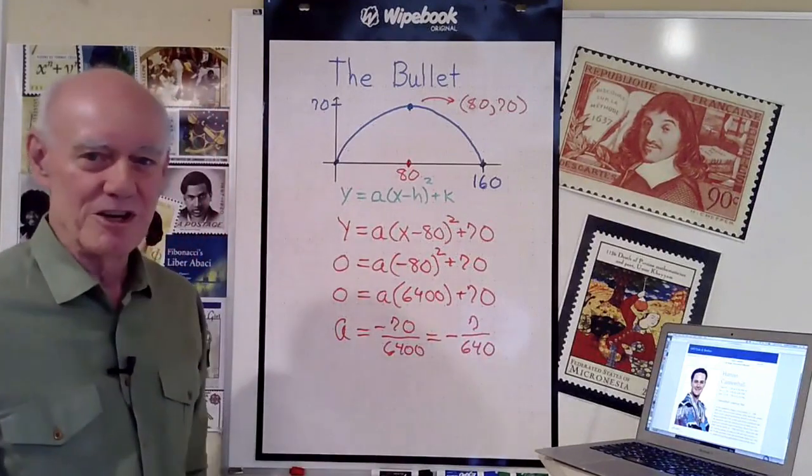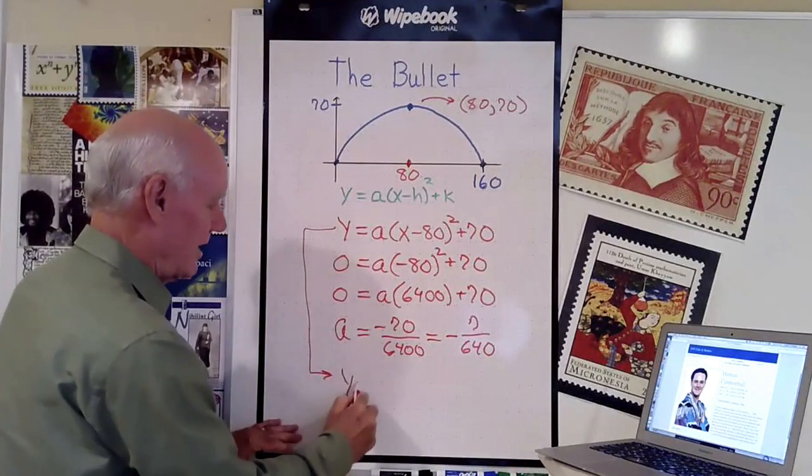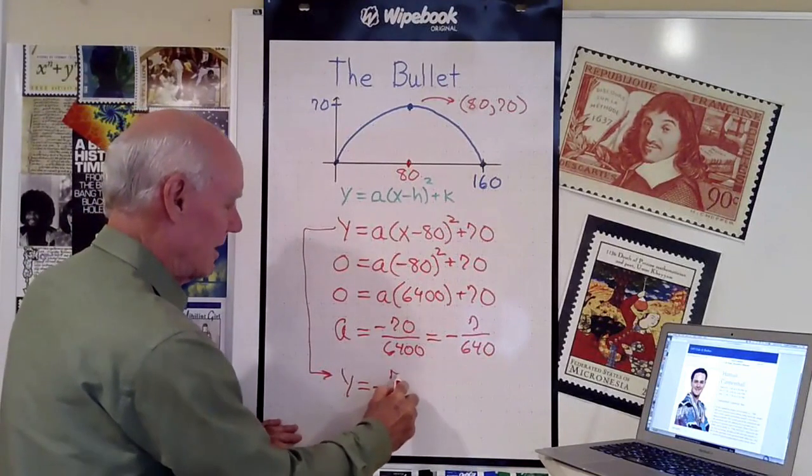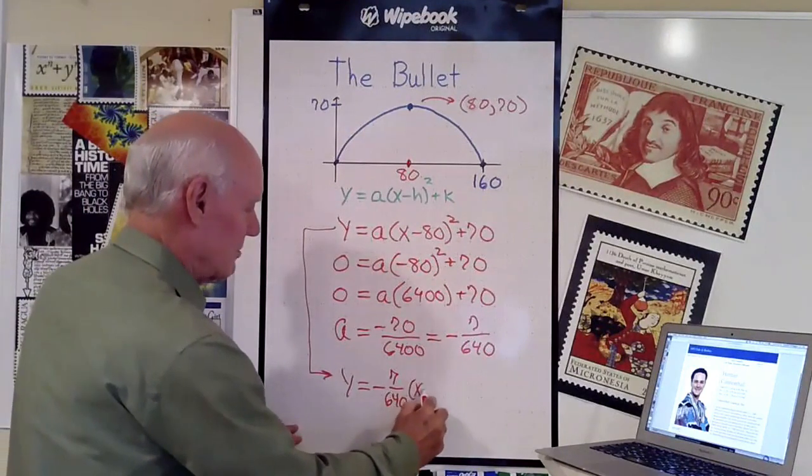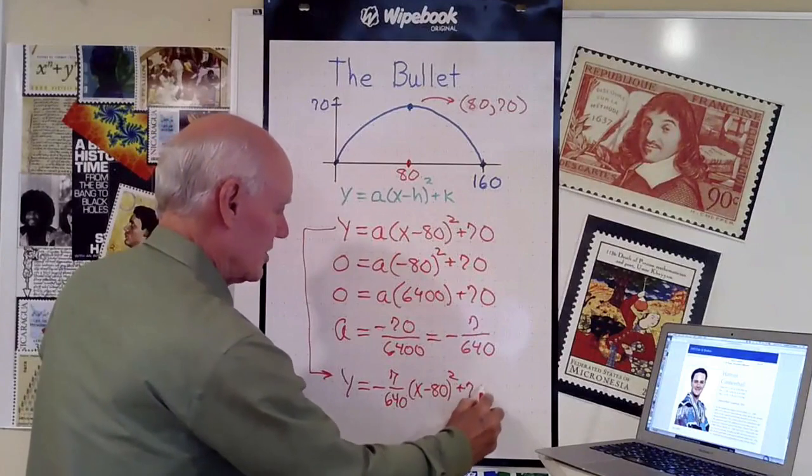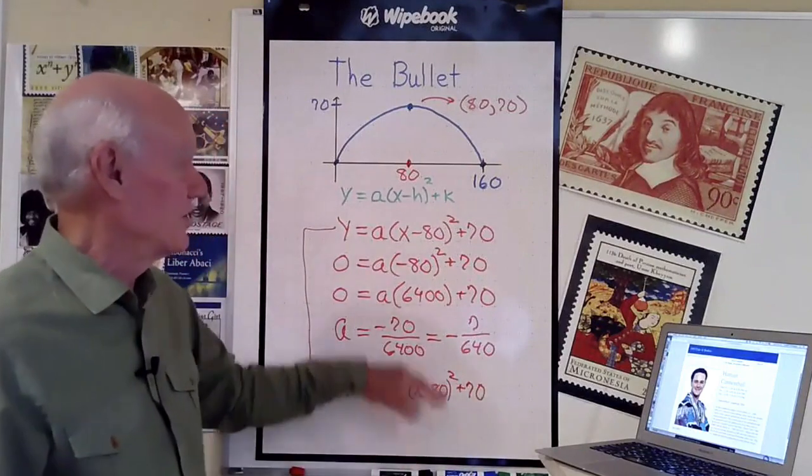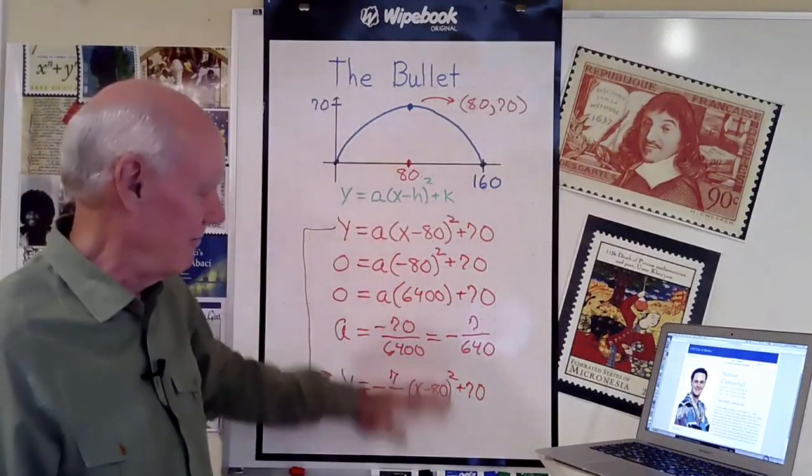Now I have my complete equation. I end up with y equals negative 7 over 640 times (x minus 80) squared plus 70. That describes the path of David Smith Jr. as he's shot out of the cannon at that county fair exactly.